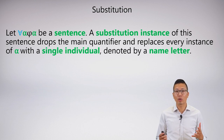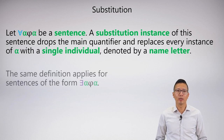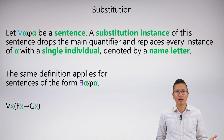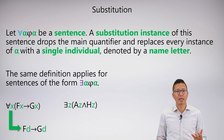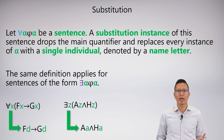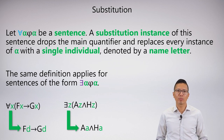A substitution instance of a quantified sentence drops the main quantifier and replaces the variables with a single individual — a name letter. Here's a quantified formula 'for all x, Fx → Gx.' A substitution instance drops the quantifier and replaces all variable letters with a single name letter. Remember that name letters are lowercase a through h. I can do the exact same with any existential statement — here's an existential formula and I can create substitution instances. A substitution instance isn't anything fancy; it's just saying here's an example with a specific individual instead of a quantified variable.